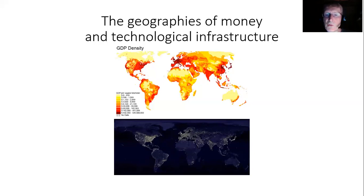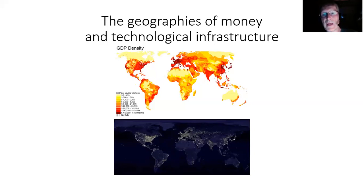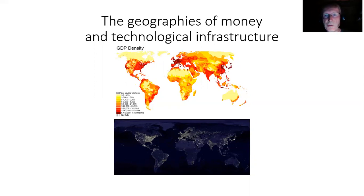The first thing you will notice is that the two maps are almost identical. So where there's money, there's technology and vice versa. This illustrates a very important point: that money and technology are really two sides of the same coin. To accumulate technological infrastructure, you need money. And of course, access to technological infrastructure will give you more money. This is the global world system of capital accumulation viewed from outer space.